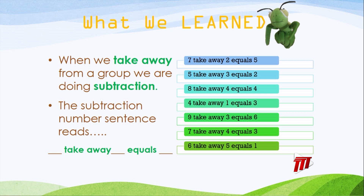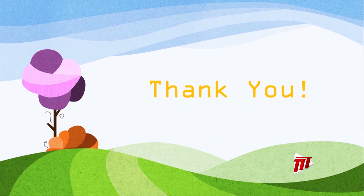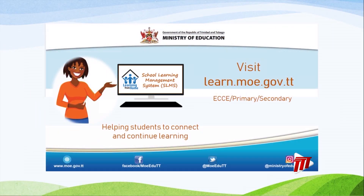Here are some of the facts we learned today: seven take away two equals five; five take away three equals two; eight take away four equals four; four take away one equals three; nine take away three equals six; seven take away four equals three. Read the last one for me — six take away five equals one. Thank you, boys and girls, for being here with me in this lesson. Till we meet again. Parents, please visit learn.moe.gov.tt for ECC, primary and secondary activities where we focus on helping students to connect and continue learning.